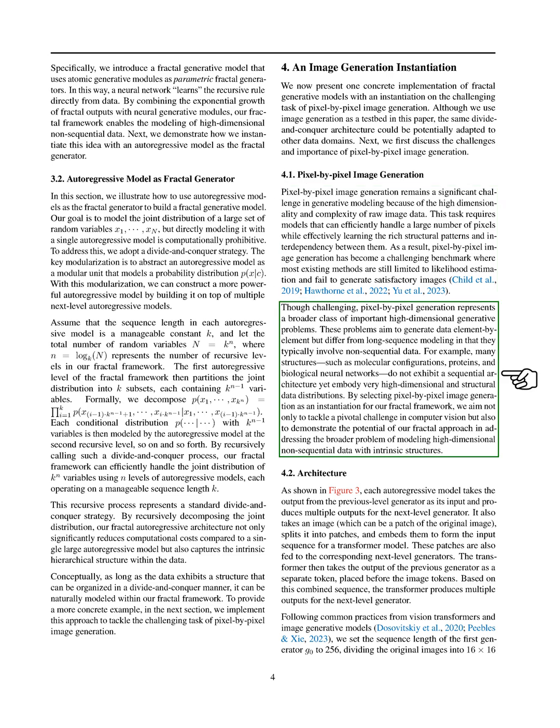Pixel-by-pixel generation is part of a larger category of high-dimensional generative problems. These problems involve generating data element by element, but unlike long-sequence modeling, they deal with non-sequential data. For instance, structures like molecular configurations and biological neural networks are high-dimensional but do not follow a sequential order. By choosing pixel-by-pixel image generation for our fractal framework, we aim to tackle a key issue in computer vision and showcase how our approach can model high-dimensional non-sequential data with inherent structures.